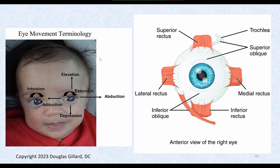Know the terminology for eye movements: elevation is raising the eye upward; depression is moving it downward; adduction is moving it inward toward the nose; abduction is moving it outward; extorsion is rotating the eye outward; intorsion is rotating it inward.